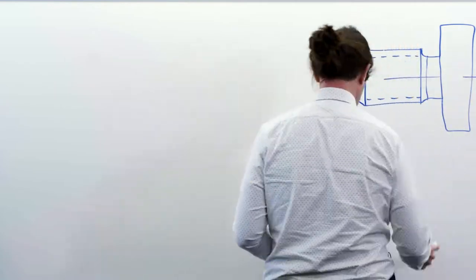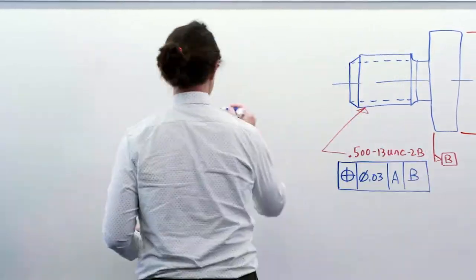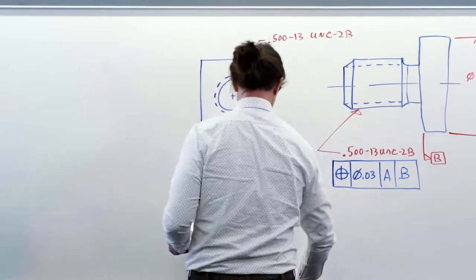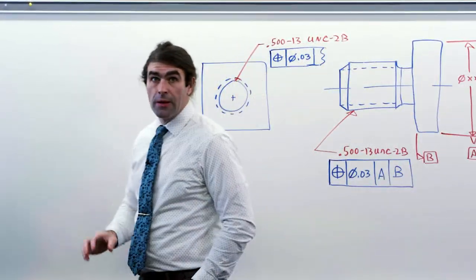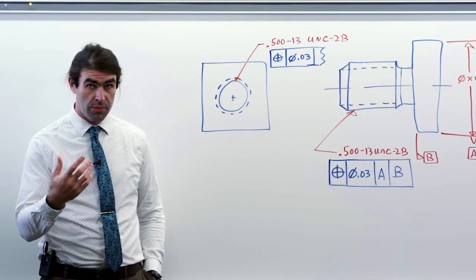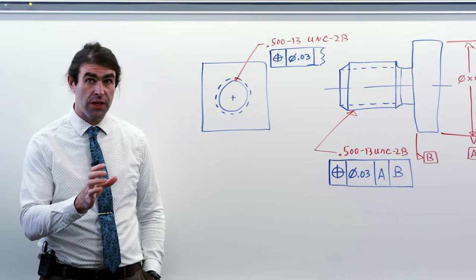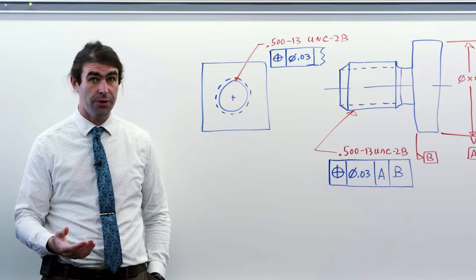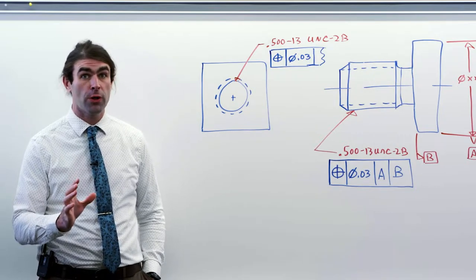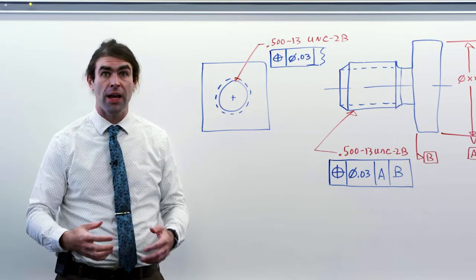Now first, let's get into applying position to threads. Position can be applied directly to threads to control the location of the feature. It's important — the ASME standard recognizes the feature related to threads as the pitch cylinder of the threads. That is what you're controlling with this position tolerance, not the major diameter or the minor diameter by default.